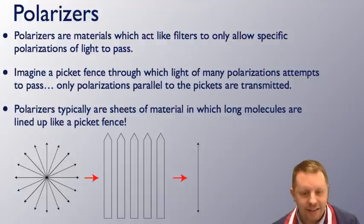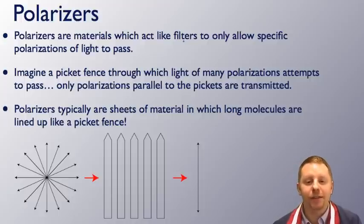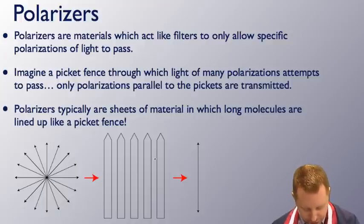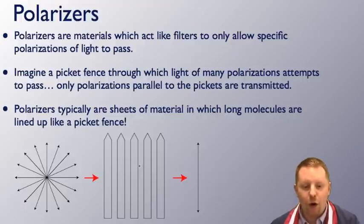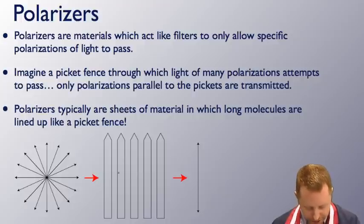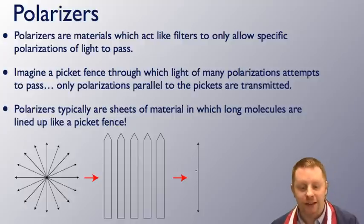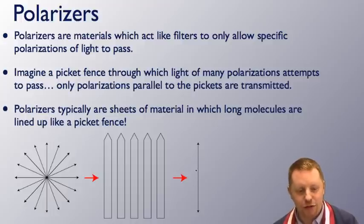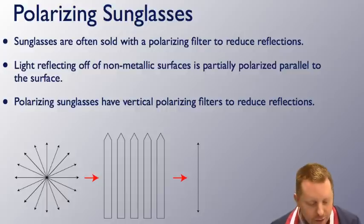How do we get that? Well, we use what's known as a polarizer. Polarizers are materials which act like filters to only allow specific polarizations, specific orientations of light to pass through it. You can think of it almost like a picket fence, a bunch of pickets, and as light comes through and hits that picket, only the ones that line up with the pickets can make it through. Everything else gets blocked. So the polarizer acts kind of like a picket fence to block anything that doesn't fit through those slits in the fence. Now, they're typically sheets of material in which very long molecules are all aligned, and those are what act like the pickets when we get to such small dimensions.